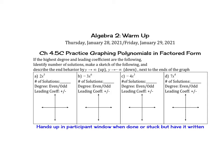Here we're given 2x to the fifth, and it's asking for the number of solutions. The number of possible solutions equals the degree, which is 5. We want to know whether the degree is even or odd and whether the leading coefficient is positive or negative, since this determines end behavior. The degree is 5, which is odd, and the leading coefficient is positive, so the graph goes in opposite directions — like a positive slope.